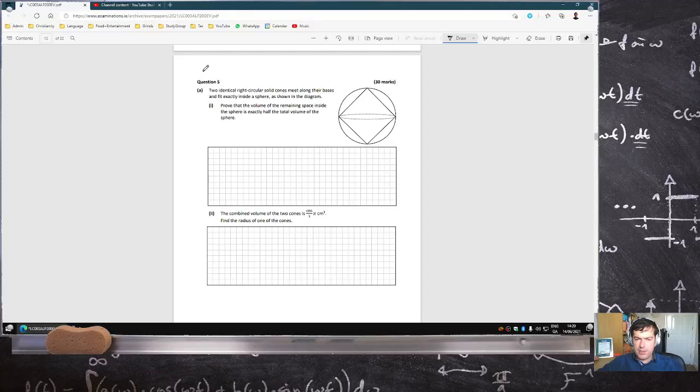Two identical right circular cones meet along their bases and fit exactly in the sphere shown in the diagram. Prove that the volume of the remaining space inside the sphere is exactly half the total volume of the sphere.